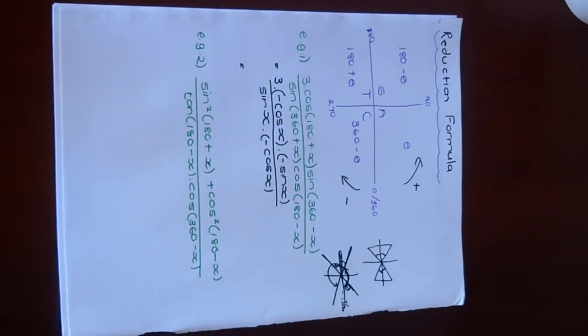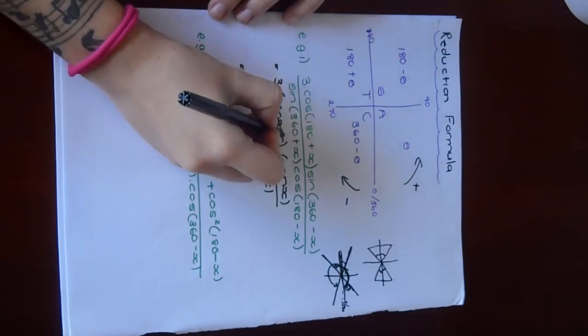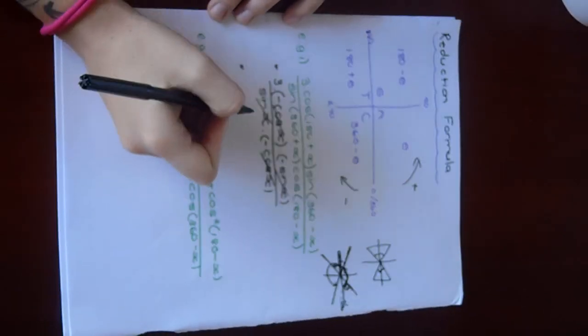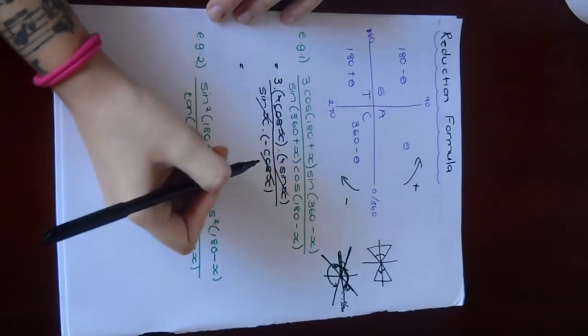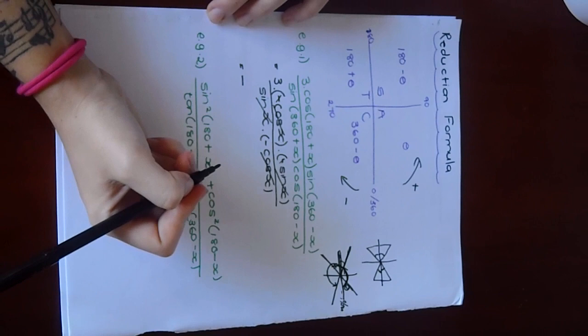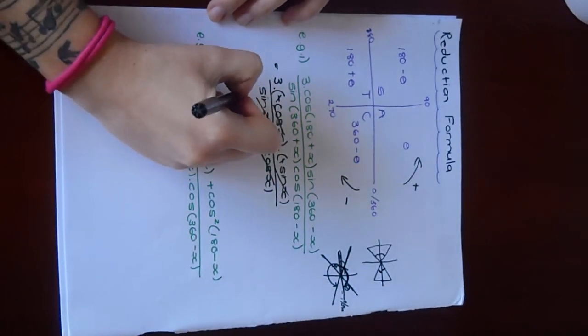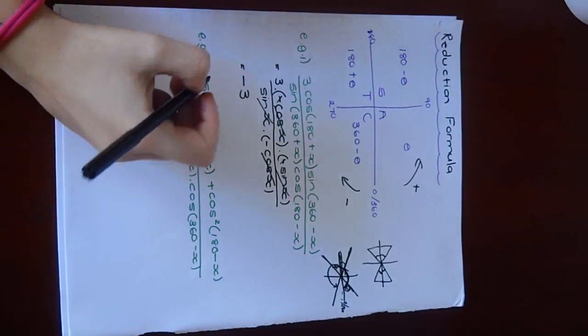Now you get to the fun part, where you just get to cancel stuff out. Just be careful of your signs. Cos will cancel with cos. Sine will cancel with sine. These two negatives will just make a positive, but you're left with another negative, so your whole answer is going to be negative. We cancelled out everything except for the 3, so the answer is negative 3. Bear in mind, if the 3 was left at the bottom and not at the top, the answer would be 1 over 3. Just careful with those fractions.